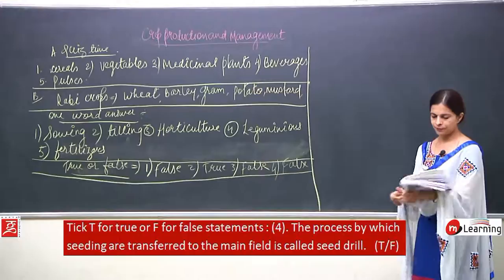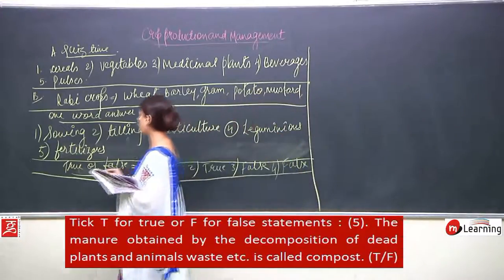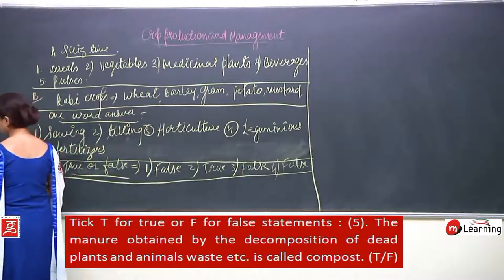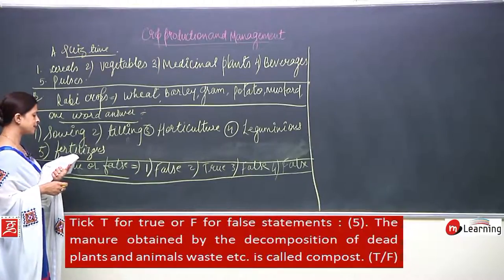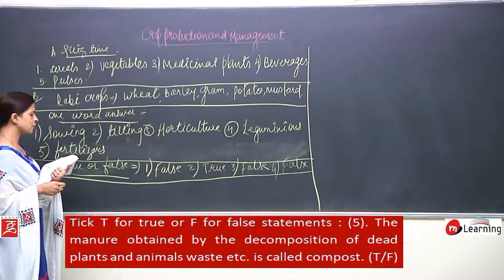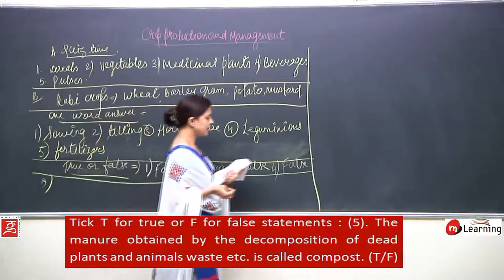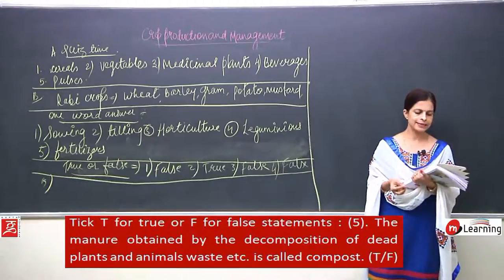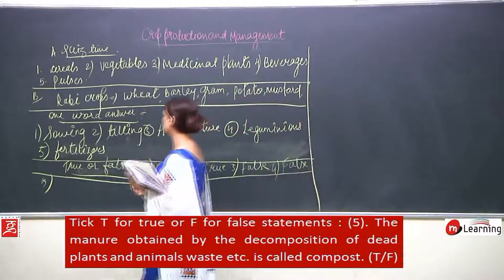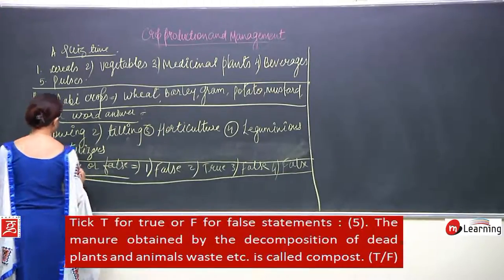Number 5: the manure obtained by the decomposition of dead plants and animal waste is called compost. That is very true.